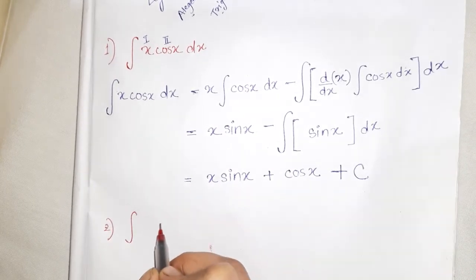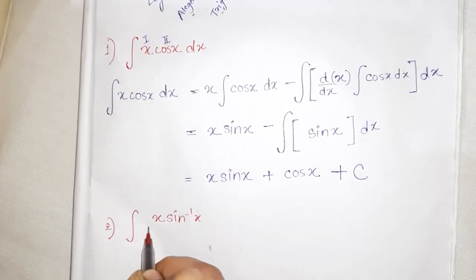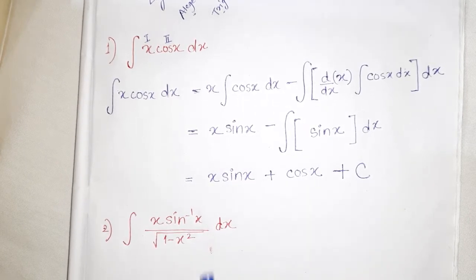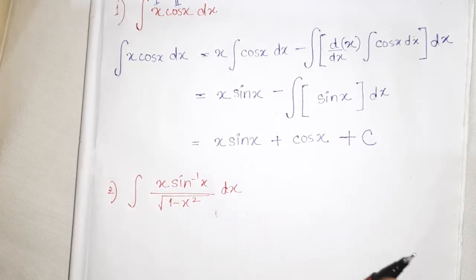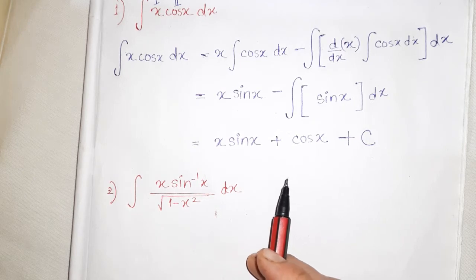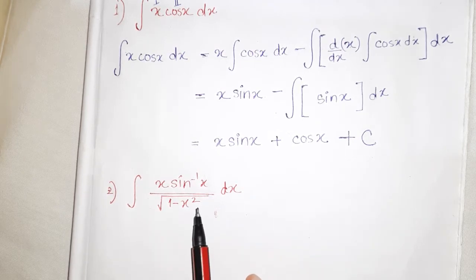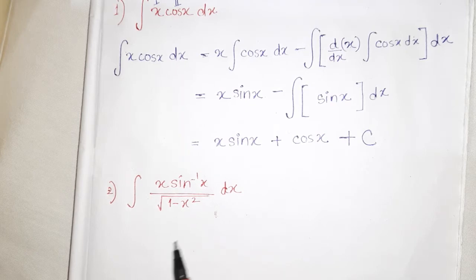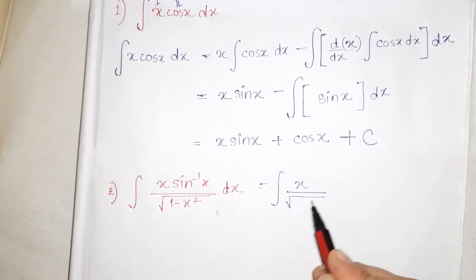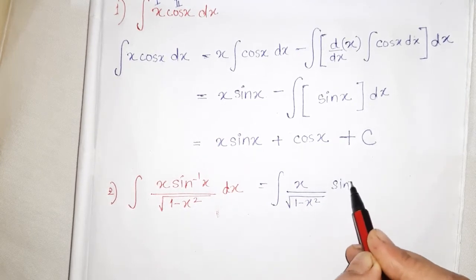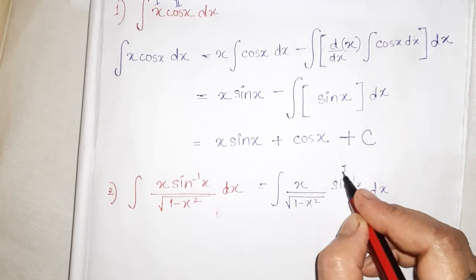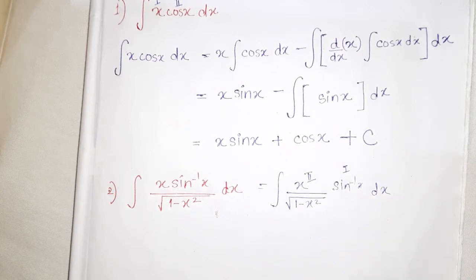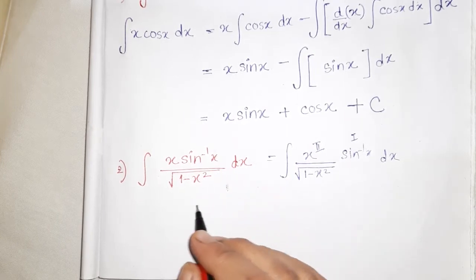Next problem: find the integration of x sin⁻¹x divided by root over 1 minus x square dx. Here we have two functions — sin inverse x, which is an inverse function, and x divided by root over 1 minus x square, which is algebraic. So the integral is in the form of (x / √(1−x²)) times sin⁻¹x dx.